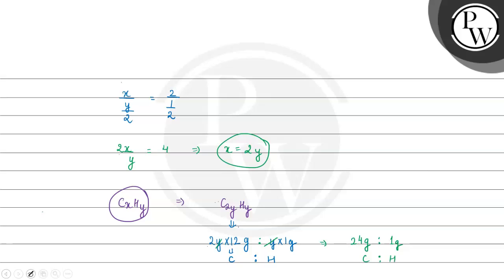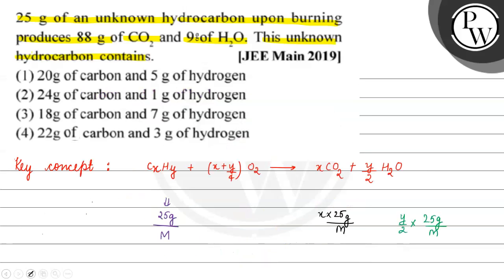The question asks for carbon and hydrogen content, so the correct answer for this question will be option 2: 24 grams of carbon and 1 gram of hydrogen. I hope you understood it well. Thank you and all the best.